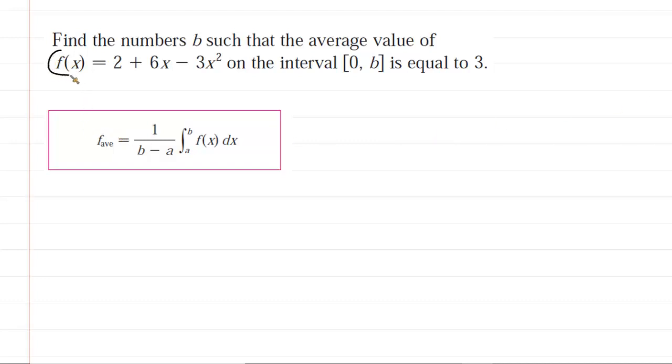In this question, we are given a function f(x) defined right here, and then we're given this sort of strange interval. We know the lower limit of the interval is 0, but then the upper limit is some mystery number b, and it is basically our job to find the value of b. And then we need to do that under the condition that the average value of the function is equal to 3.